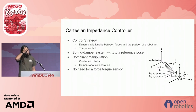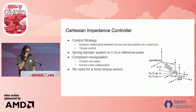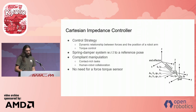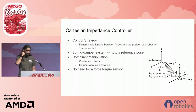A Cartesian impedance controller is a control strategy that works on a torque level. You can basically see it as a spring-damper system with respect to a reference pose. You can use it for compliant manipulation such as contact-rich tasks or human-robot collaboration. This control strategy also does not need a dedicated force torque sensor.